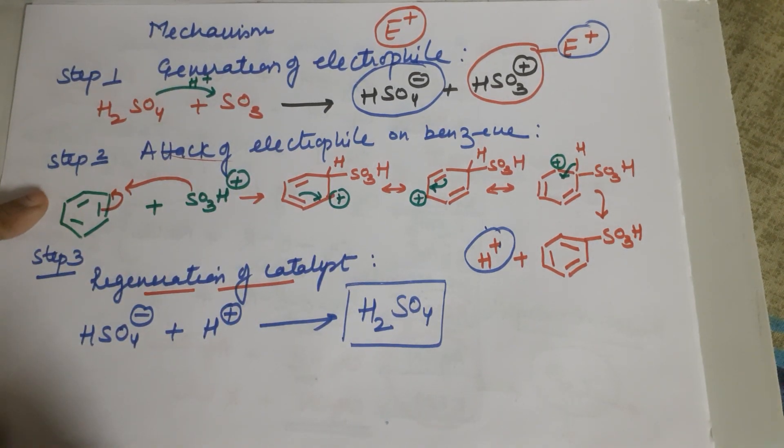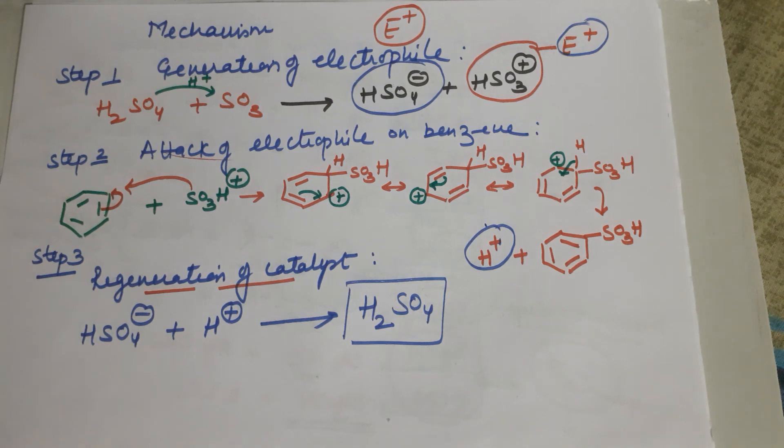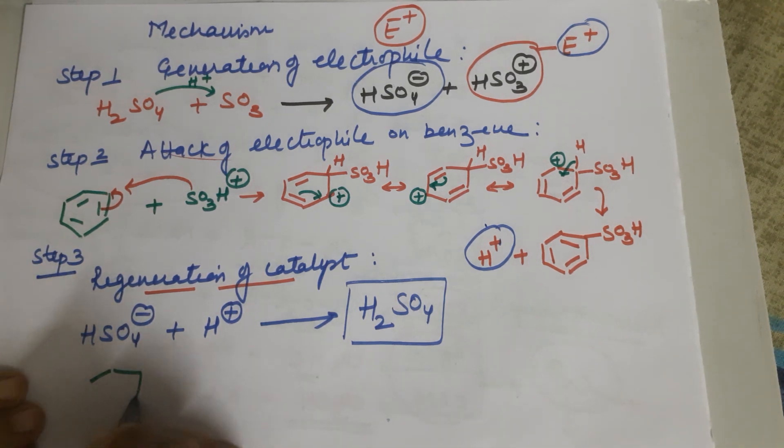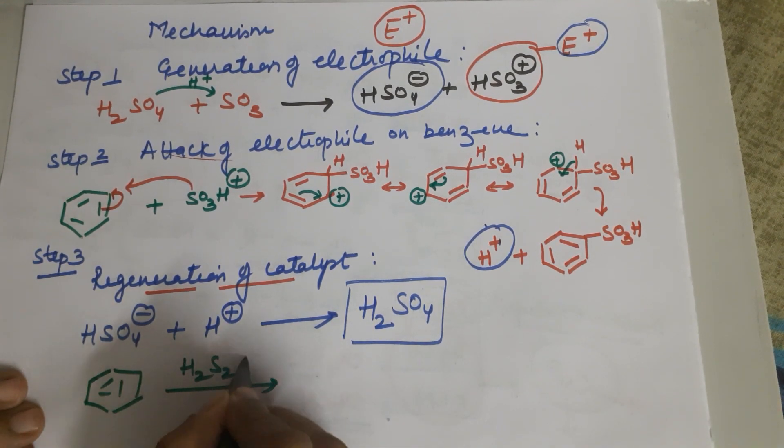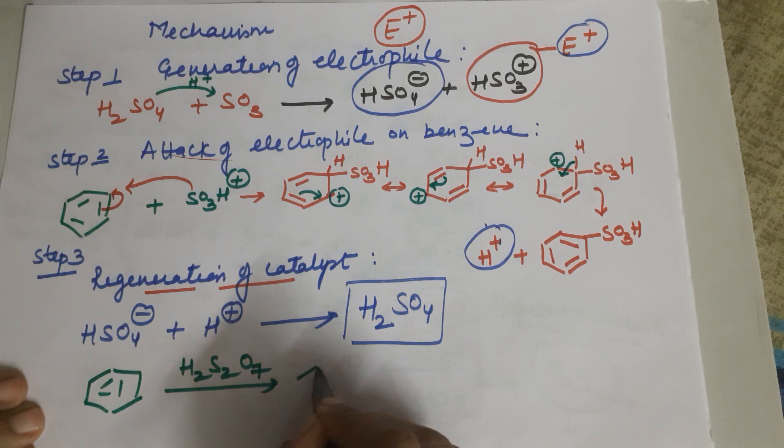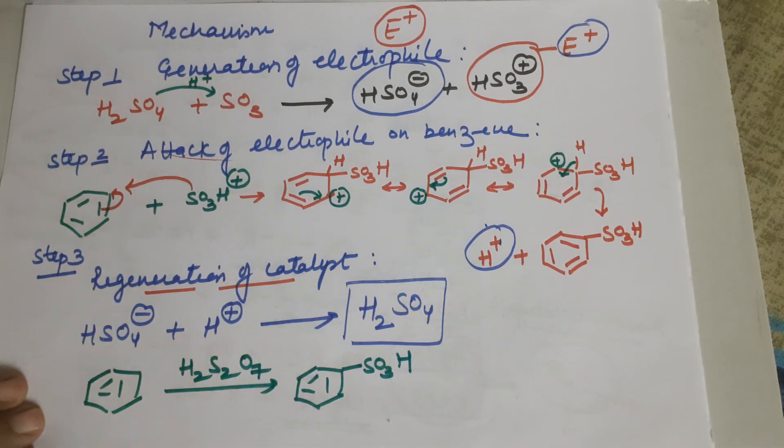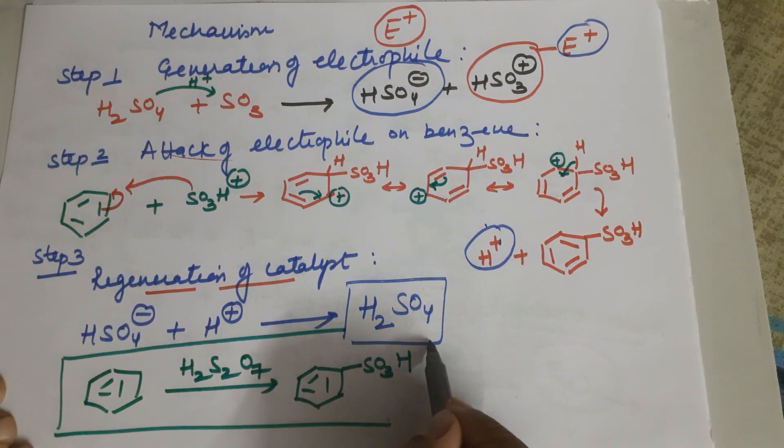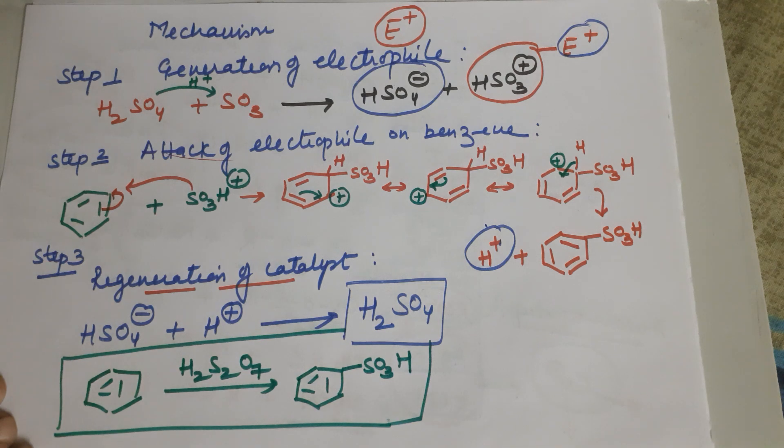The conclusion is if you have got benzene and to this you add oleum or fuming sulfuric acid, it would always lead to the formation of benzene sulfonic acid. And we have done the mechanism for this particular reaction.